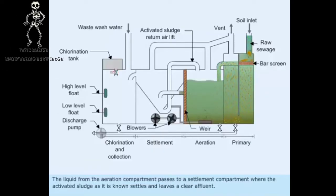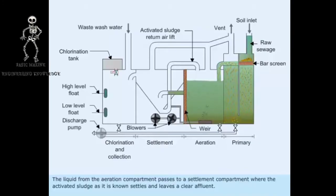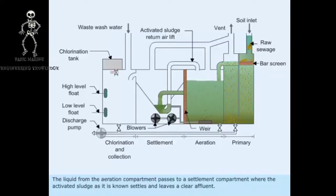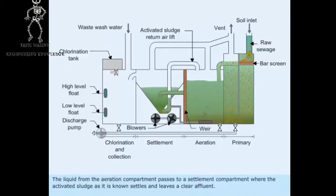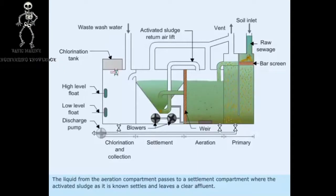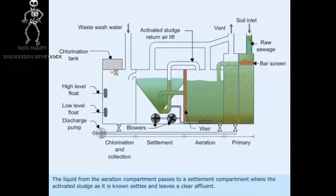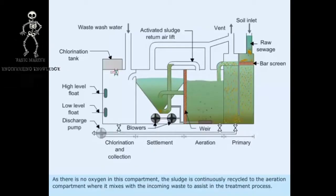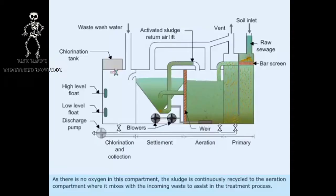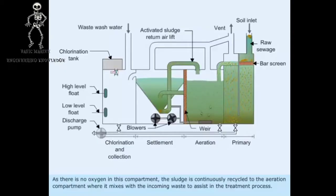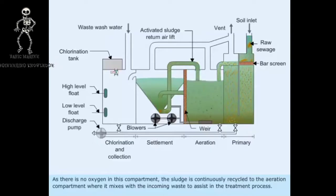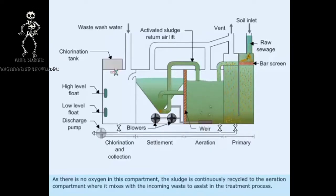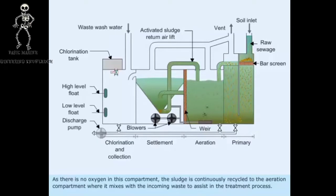The liquid from the aeration compartment passes to a settlement compartment where the activated sludge, as it is known, settles and leaves a clear effluent. As there is no oxygen in this compartment, the sludge is continuously recycled to the aeration compartment, where it mixes with the incoming waste to assist in the treatment process.